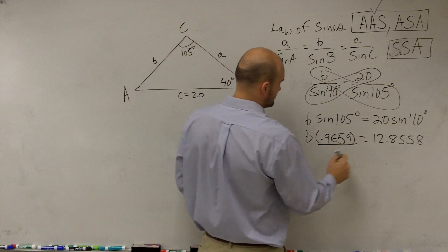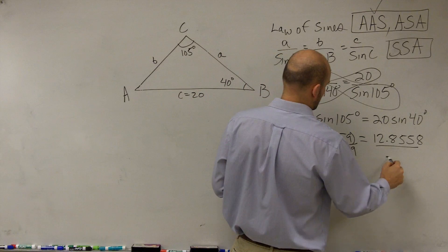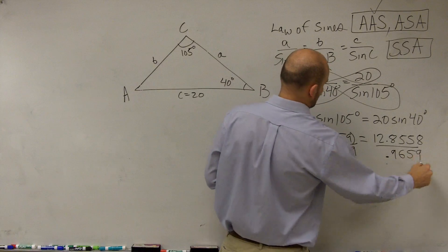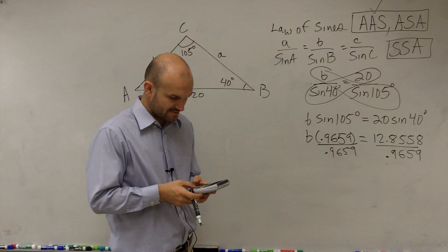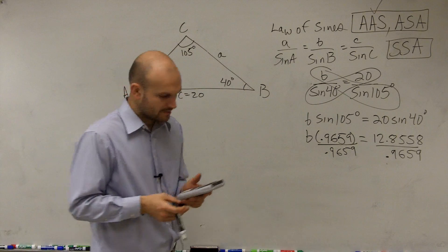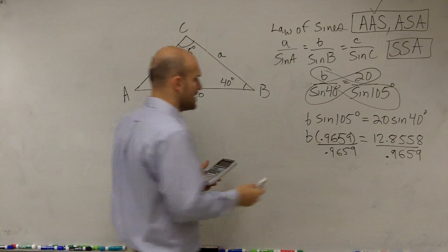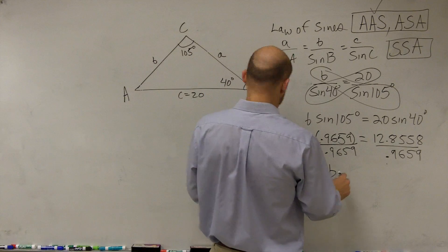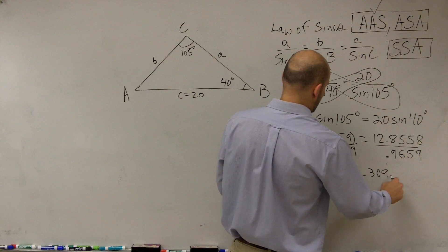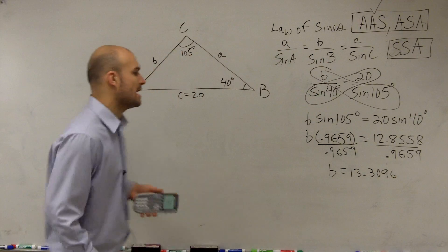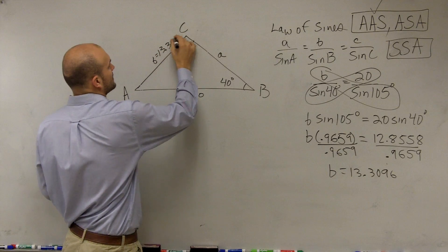Then divide. So you can say divided by 0.9659. And therefore, my side length b is going to equal 13.3096.